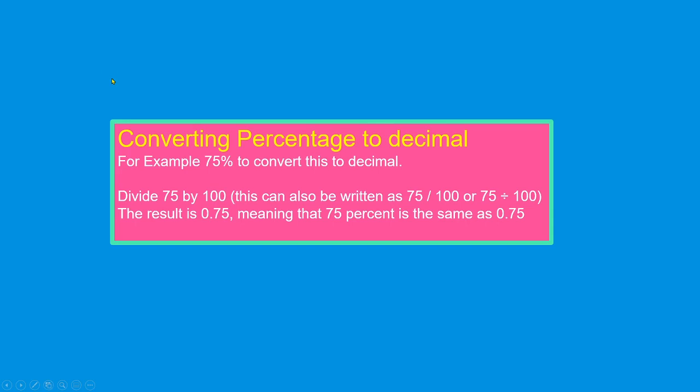Converting percentage to decimal. For example, 75% convert this to decimal. Divide 75 by 100.